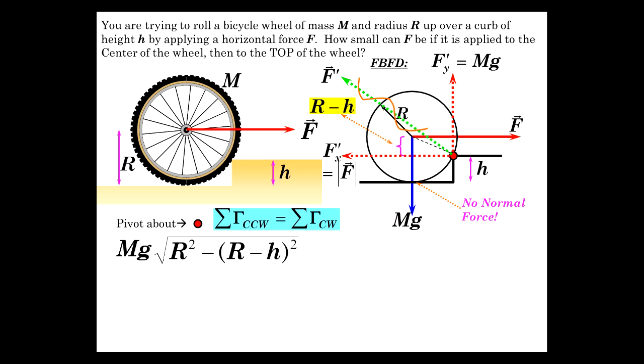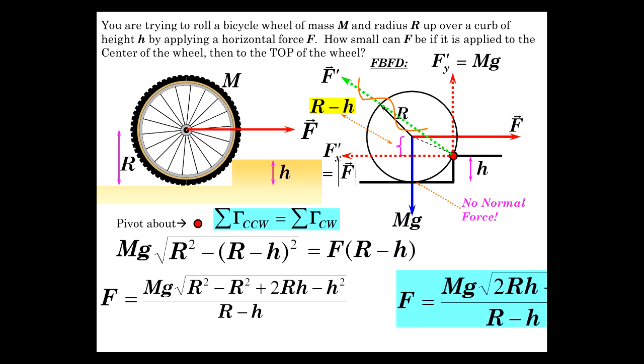So the square root of the difference of the squares equals the applied force through R minus h. That's our equation. Let's solve it for the force and get our answer. Expand that radical and R squared nicely goes away. And so there's the result, and it is a pretty interesting result.